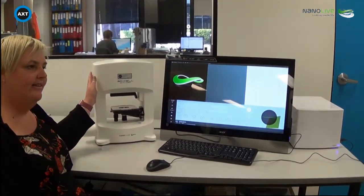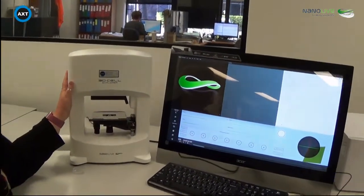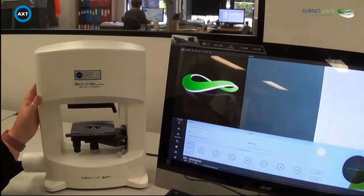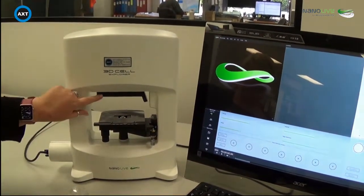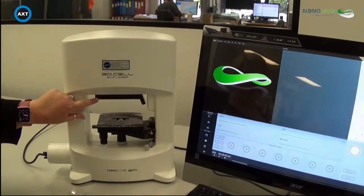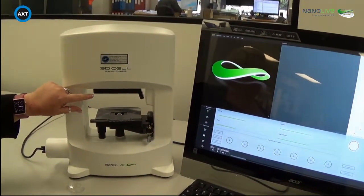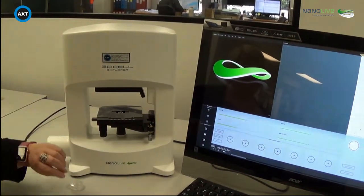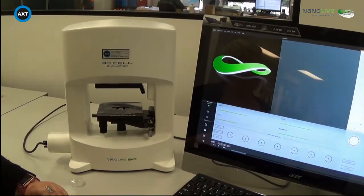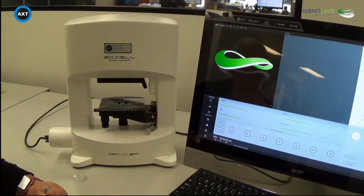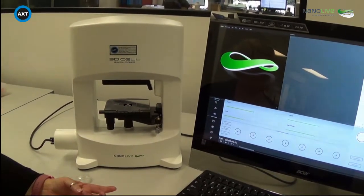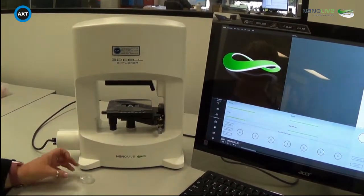This is a microscope that takes 3D and 4D images of live cells and fixed cells. The microscope itself has a rotating arm here. The system uses holographic tomographic microscopy to image your cells in 3D and 4D and requires no stains, markers, or dyes. The way that it's measuring a sample to give you a 3D image is by measuring the refractive index within your sample.